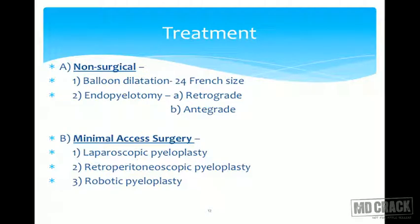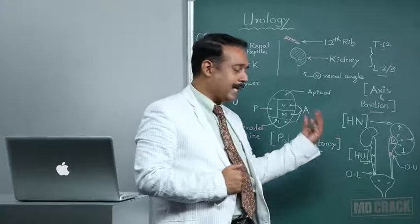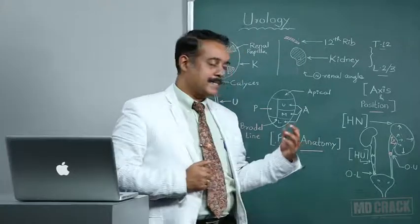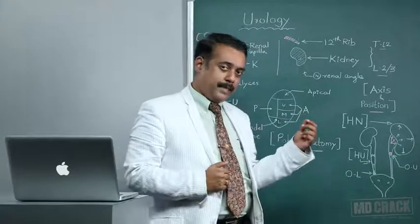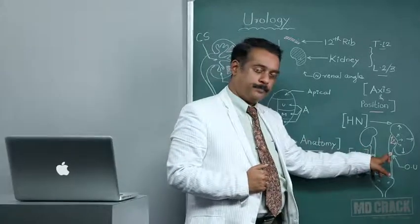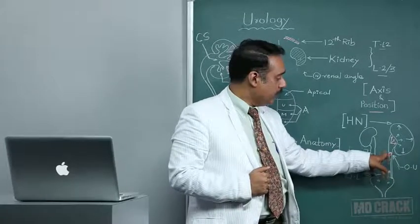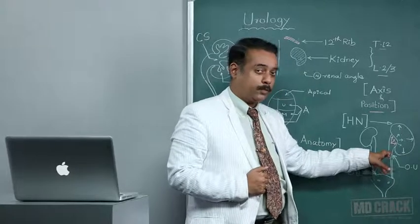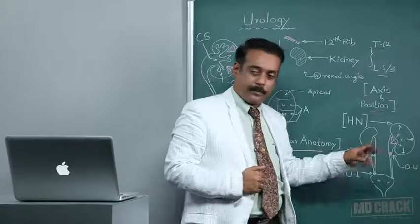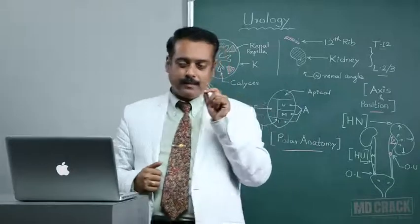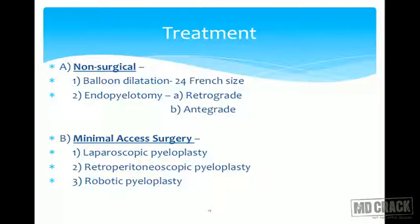Treatment options include non-surgical and surgical approaches. Non-surgical conservative approaches include balloon dilatation, using a 24 French balloon passed across the level of obstruction, dilated momentarily for one minute, then deflated. One must carefully select the site since an eroded or weakened junction could rupture the ureter if dilatation is performed incorrectly. Endopyelotomy — the endoscopic approach — can be done either in a retrograde or antegrade manner.